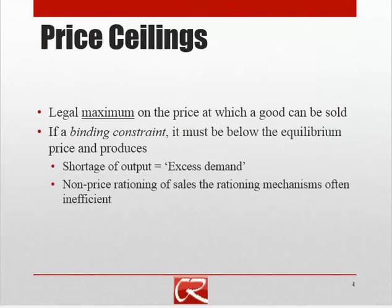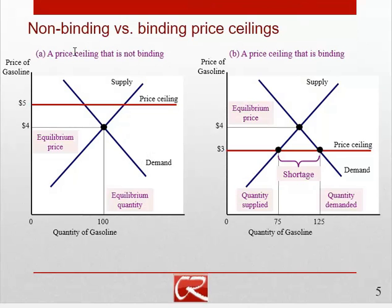Not every price ceiling is what we call binding. A binding constraint is one that actually limits someone's behavior. For example, if the normal equilibrium price of gasoline is $4 a gallon and we bring in a law saying you're not allowed to charge more than $5 a gallon, that law doesn't actually limit anyone's behavior. For a price ceiling to have any effect, it must be below the equilibrium price — causing people to do something they otherwise would not have been doing.